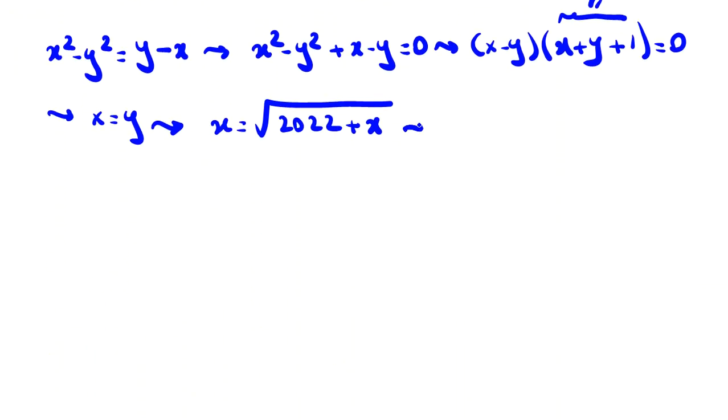If we raise both sides to the power of two and take the right side to the left hand side, x squared minus x minus 2022 equals zero.